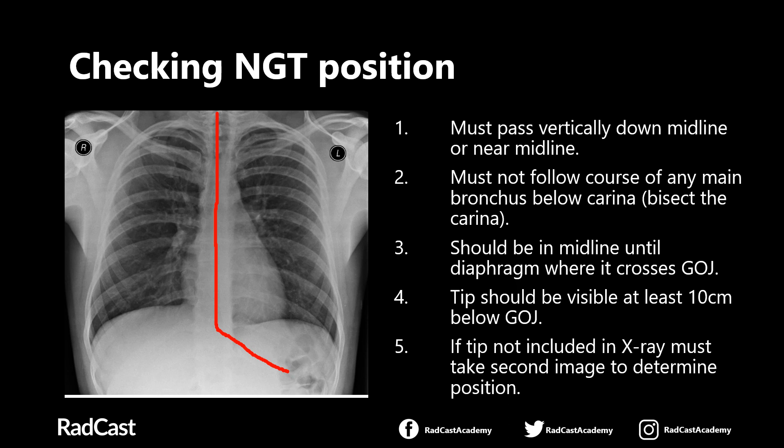One other thing to be aware of is that sometimes the tip may continue below the bottom of the x-ray if it's inserted a bit too far or the x-ray is taken a bit too high, and you may not be able to see the tip. In these cases, strictly speaking, you should get another x-ray a bit lower down to make sure you can actually see where the tip is and make sure it hasn't wandered somewhere you don't want it, like into the duodenum or further down into the bowel. As long as you can see the tip and say yes to all the other points, the NG tube is in the right position and safe to use.